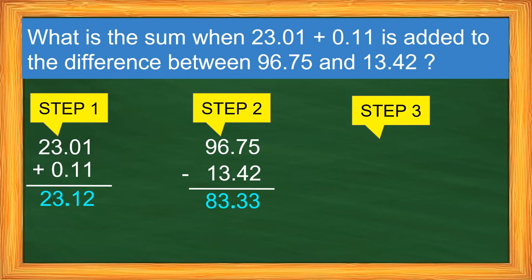Now the last step is to add the two, because what we're looking for is the sum of the results of the two operations. So we'll add 23.12 and 83.33. So again, arrange in column. Be sure the decimal points are aligned. And then add from the right. So the answer to this is 106.45.